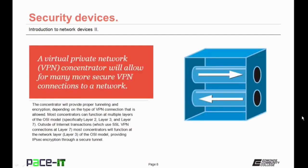Let's move on to the virtual private network concentrator — the VPN concentrator. This will allow for many secure VPN connections to a network. The concentrator will provide proper tunneling and encryption depending upon the type of VPN connection allowed. Most concentrators can function at multiple layers of the OSI model — specifically Layer 2, Layer 3, and Layer 7. Outside of internet transactions using an SSL VPN connection at Layer 7, most concentrators will function at Layer 3, providing IPSec encryption through a secure tunnel.